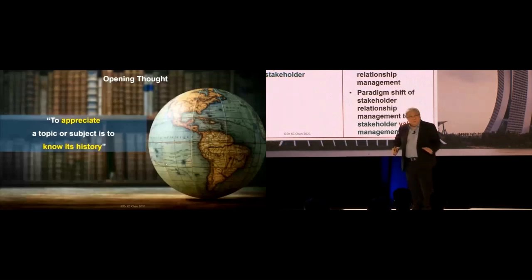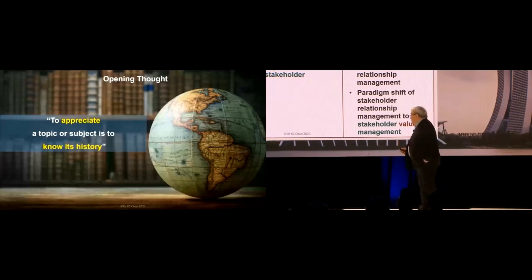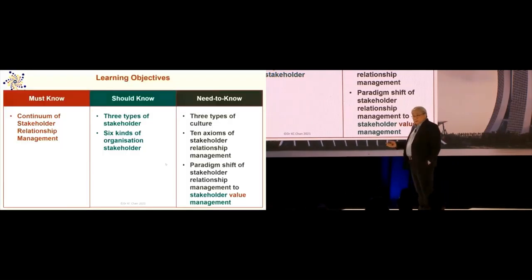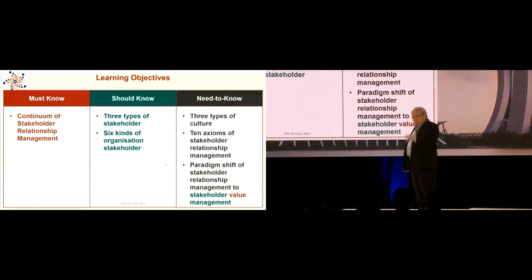To keep within 30 minutes, I'd like to focus on three key areas. The first area is to understand the history displayed in the continuum of stakeholder relationship management. My process flow is: must know is one, should know is two, need to know is three — making six boxes in total.